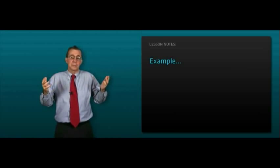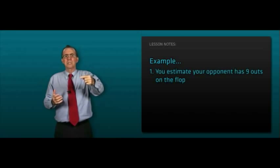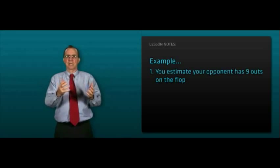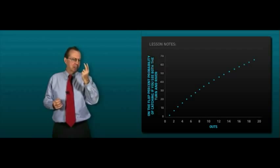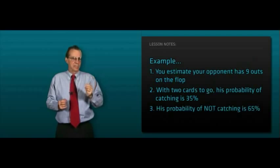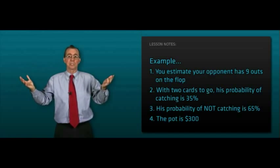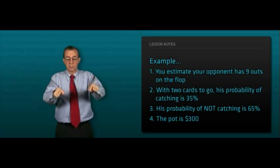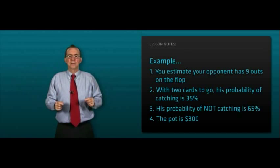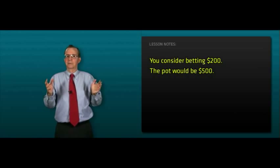An example, and this is a little bit more difficult than the previous examples. Let's say we estimate our opponent has nine outs on the flop. With two cards to go, we have to look at the flop graph. His probability of catching is 35%. Well, if his probability of catching is 35%, his probability of not catching is 65%. We look at the pot, it's $300. You consider betting $200. This will bring the pot to $500.